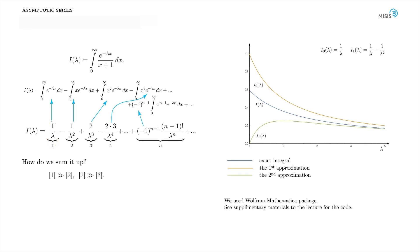Now, let's plot the next order approximation. It's the sum of two terms in our series: 1/λ - 1/λ². We see that it gives even bigger discrepancy for lambda of the order of 1, but it performs better for large lambda.